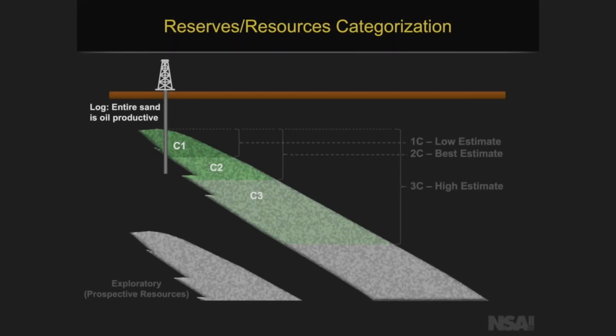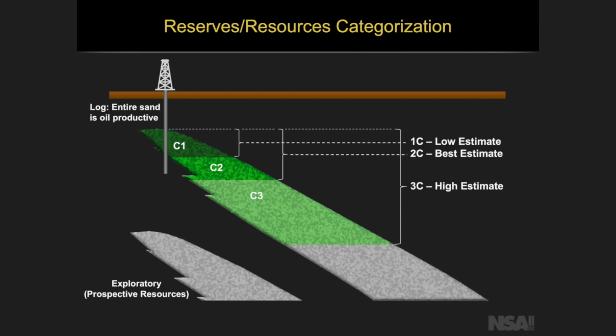Now we're going to drill a well in the top of this reservoir. The first well has hydrocarbon — oil is represented by the green — in the C1 category all the way to the bottom of the well. In our low-side case that's going to be the C1, which is the same as the 1C low estimate, and beyond that a best estimate, maybe twice that size, down to the high-side estimate which is the C3, and cumulatively the 3C estimate.